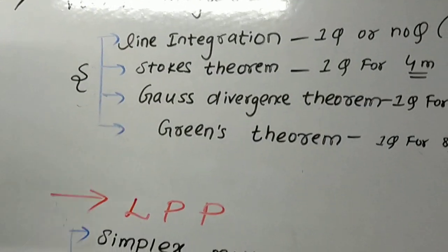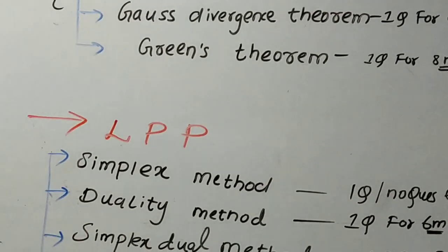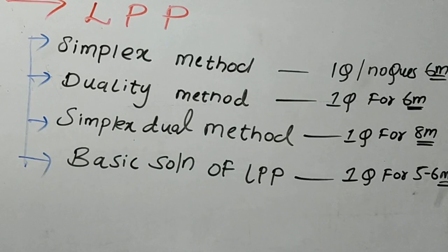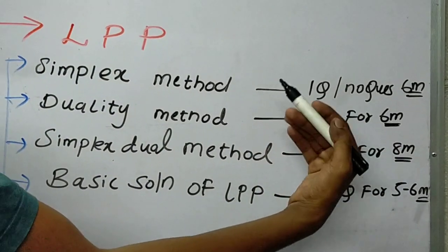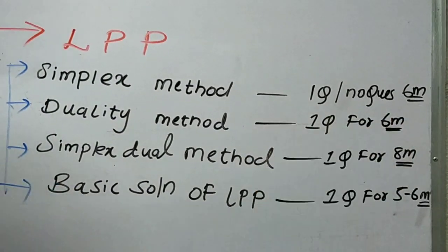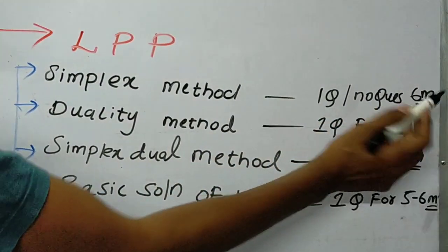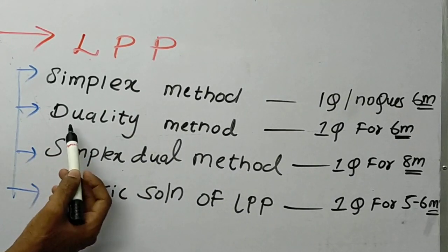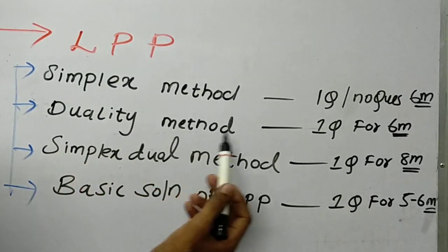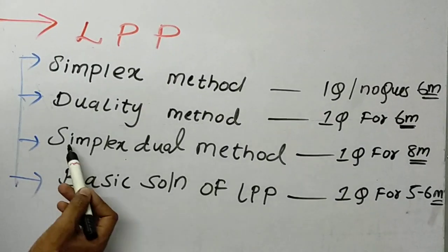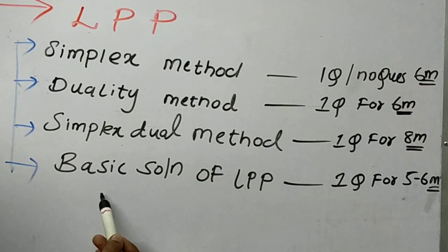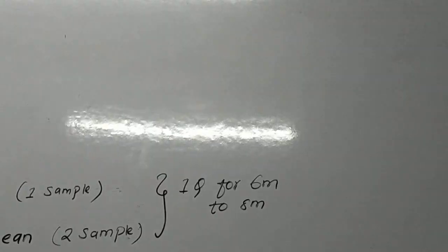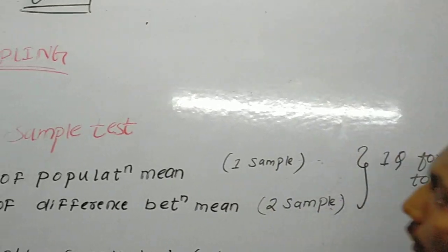Moving on to the next chapter — LPP. Simplex method may come for one question for six marks, otherwise no question will come in your Mumbai University exam. Duality method — one question for six marks. Simplex dual method — one question for eight marks. Basic solution of LPP — one question for five to six marks.